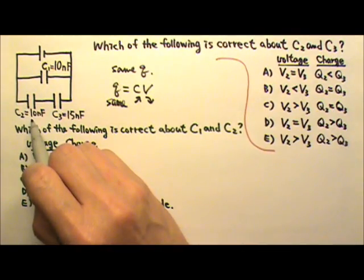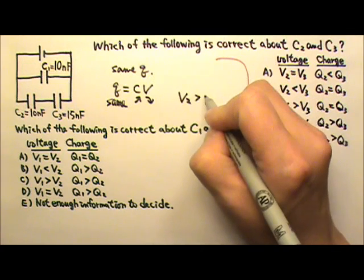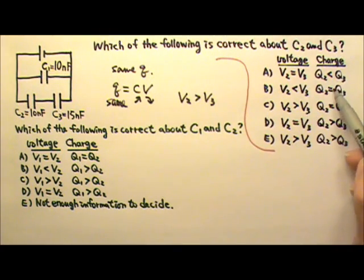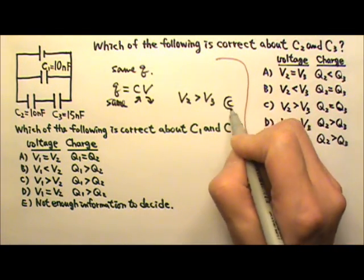C2 has a smaller capacitance, so C2 must have a higher voltage. So V2 must be higher than V3. So Q has to be the same and V2 has to be higher than V3. So the answer is C.